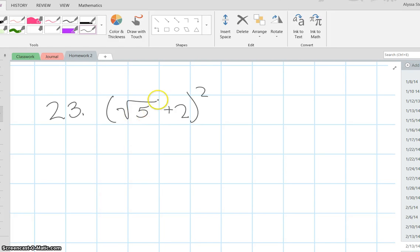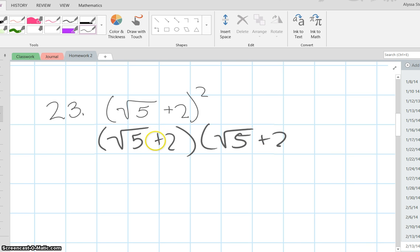For number 23, you need to use FOIL. Since it's squared, you have to write the whole expression out. So it would be the square root of 5 plus 2 times the square root of 5 plus 2.